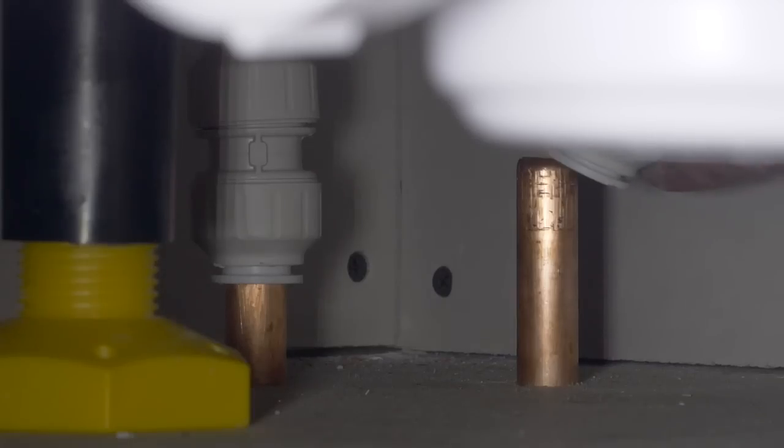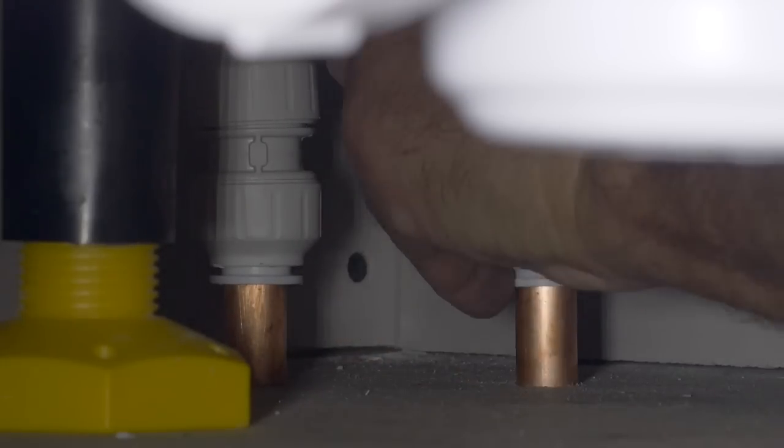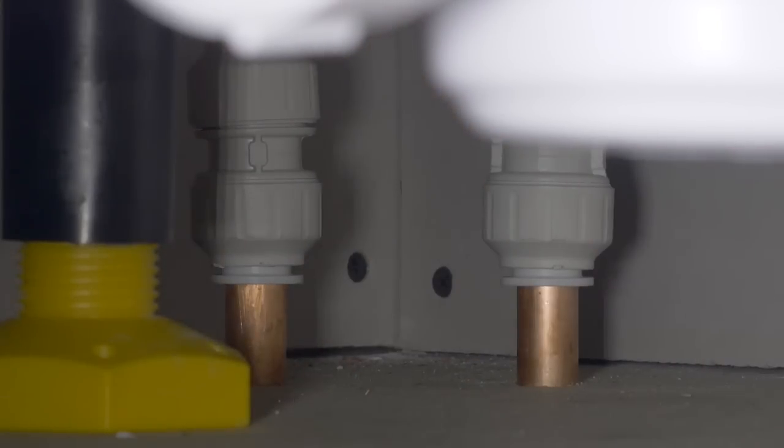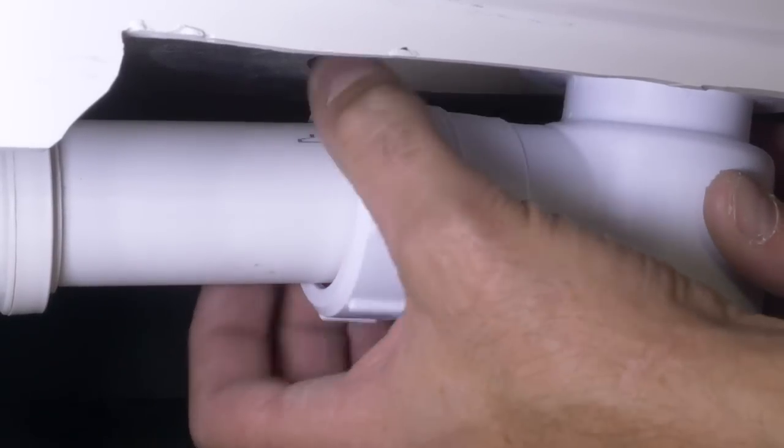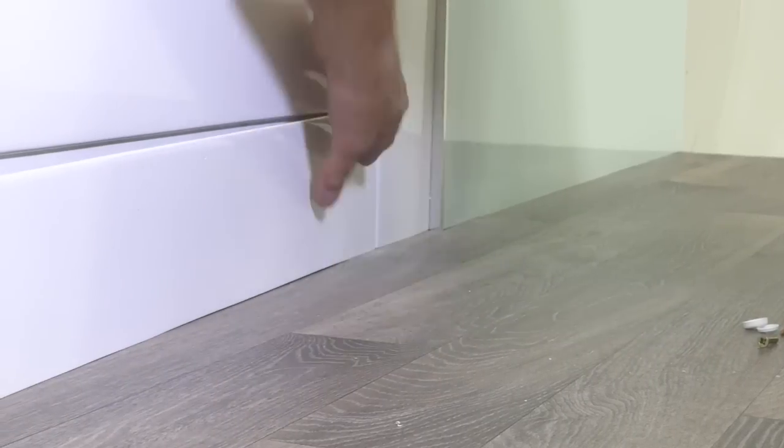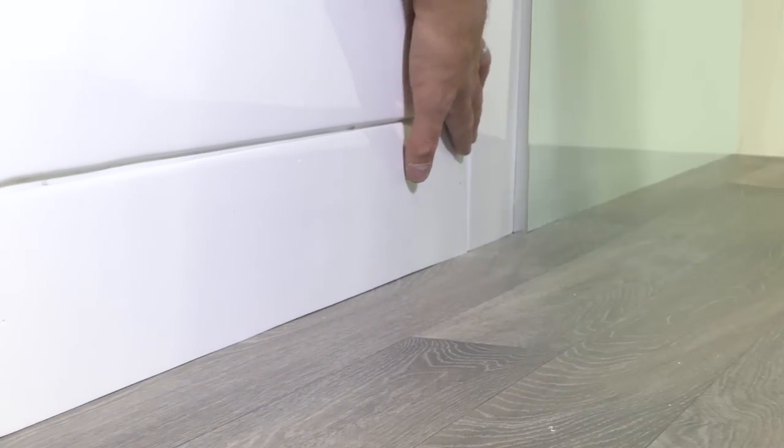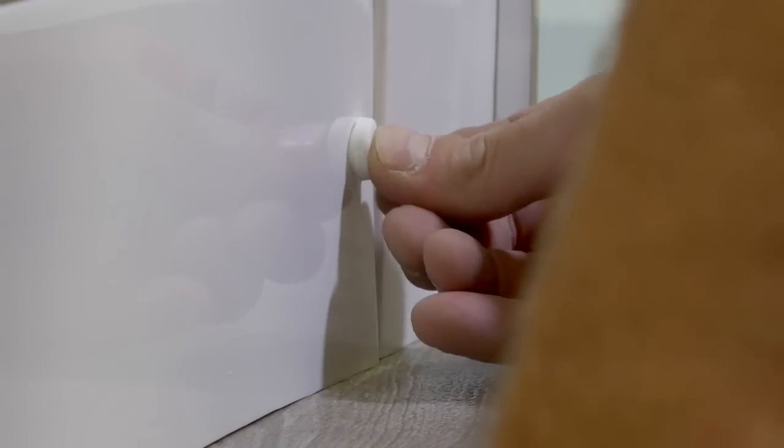Through the access hole in the base unit connect the speed fit barrier pipes to the wall inlets. Ensure the hot and cold pipes are connected to their corresponding connections. Fit a shower waste and pipe work and then check for leaks. Position the access cover and then drill through the cover and base using a 3mm drill bit. Fix the cover using 25mm screws, plastic washers and screw caps.